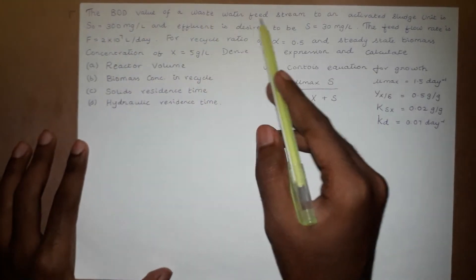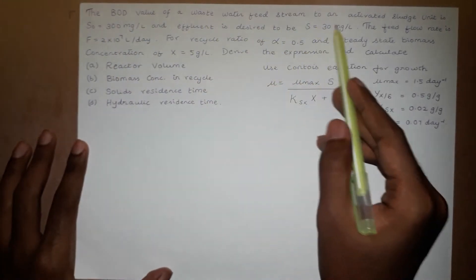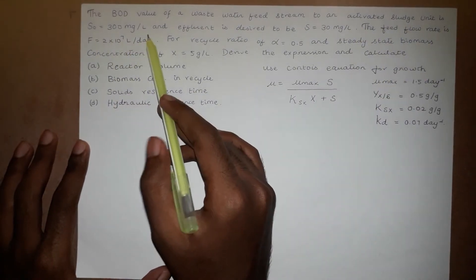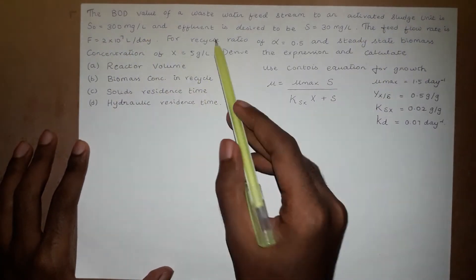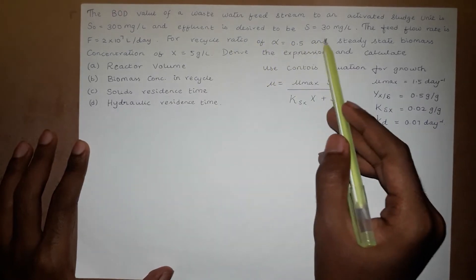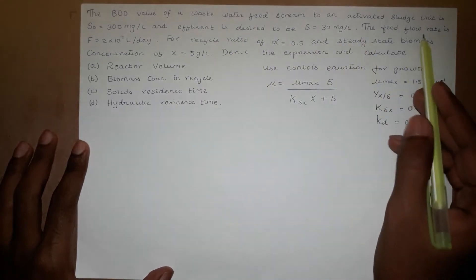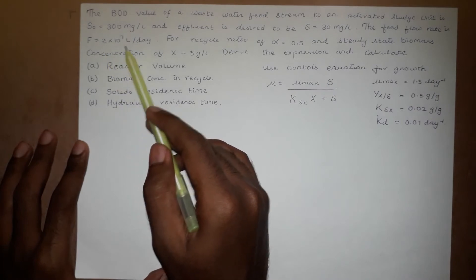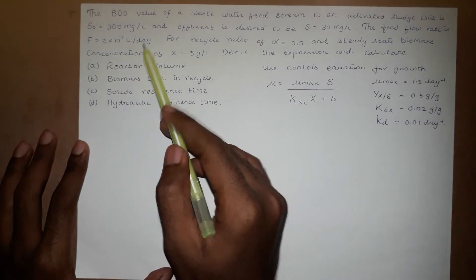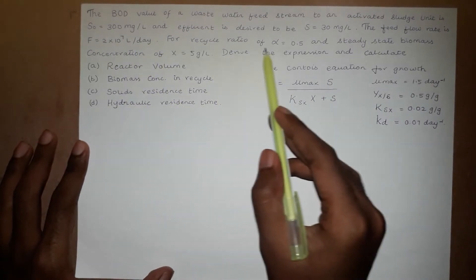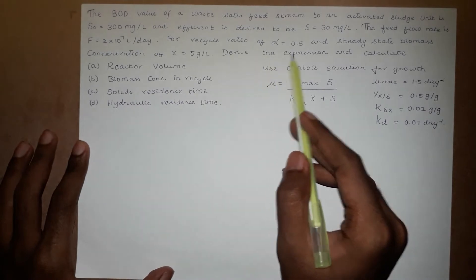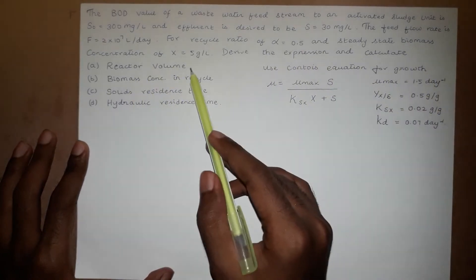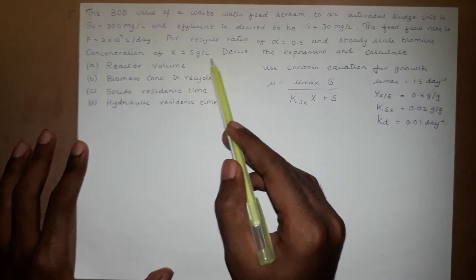The BOD value of a wastewater feed stream to an activated sludge unit is S0 equal to 300 mg per litre, and effluent is desired to be S equal to 30 mg per litre. The feed flow rate is F equal to 2 × 10^7 litre per day. The recycle ratio alpha is equal to 0.5 and steady state biomass concentration X is equal to 5 g per litre.